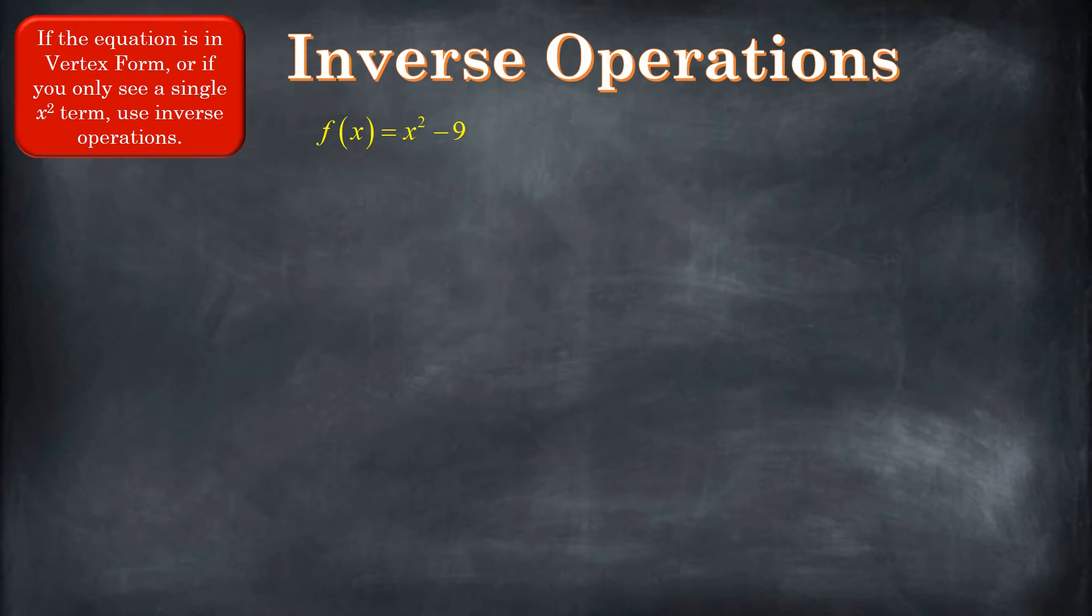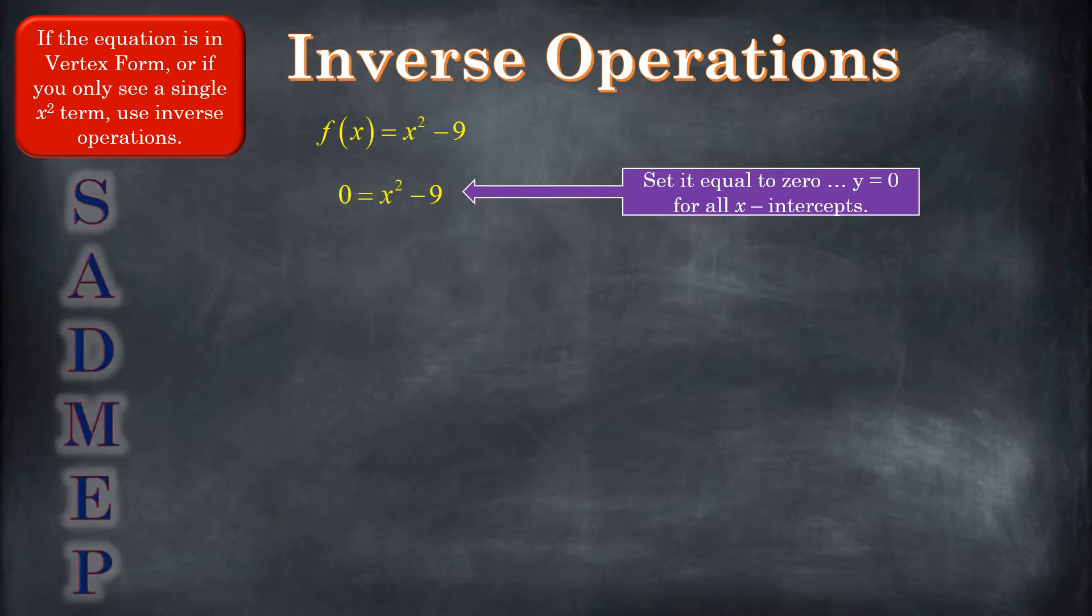Well, inverse operations is what we do in algebra when we're trying to undo operations. So our very first step in finding x-intercepts is we set it equal to zero. The reason we do that is because this is the same as y, and y is zero for all x-intercepts. Now, we're going to use inverse operations. We're going to do subtraction and addition first, and then we're going to do multiplication and division after that, exponents after that, and the very last thing we'll take care of is anything that's in a group.